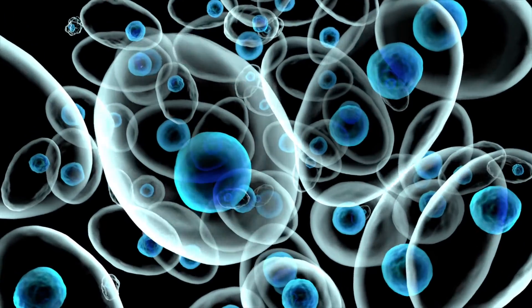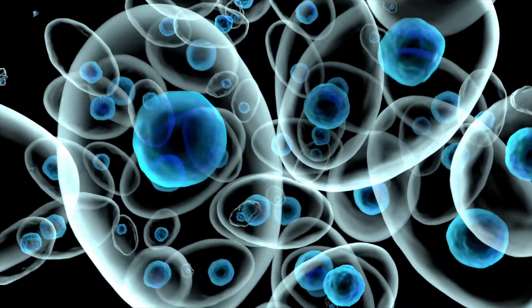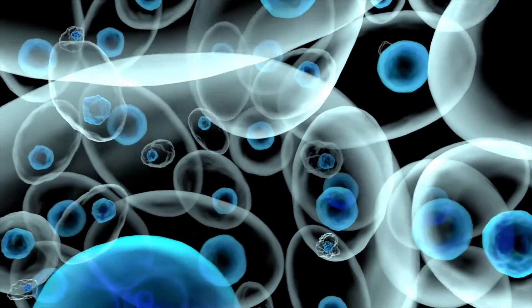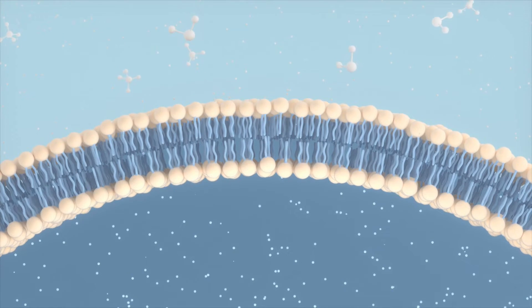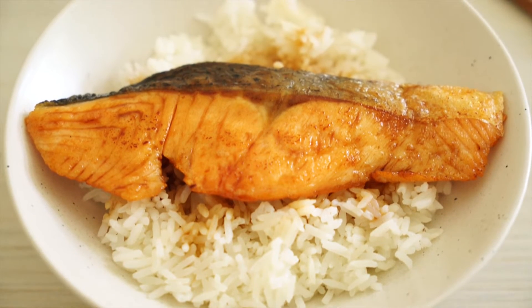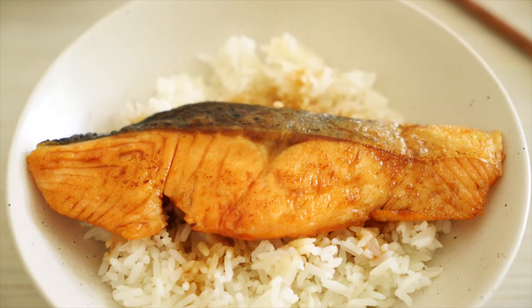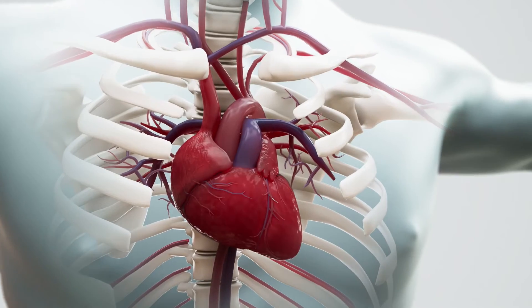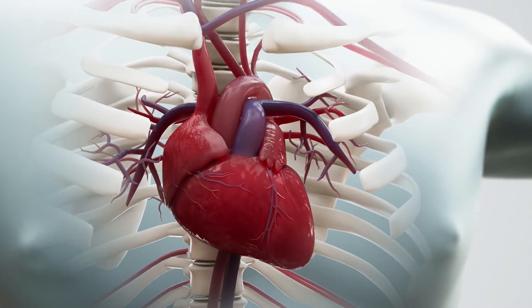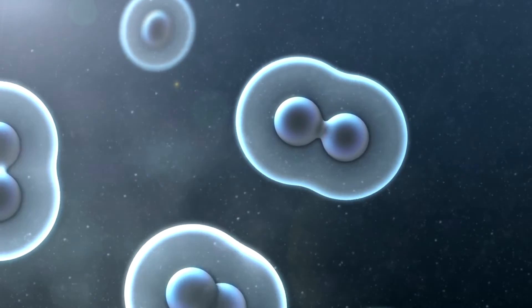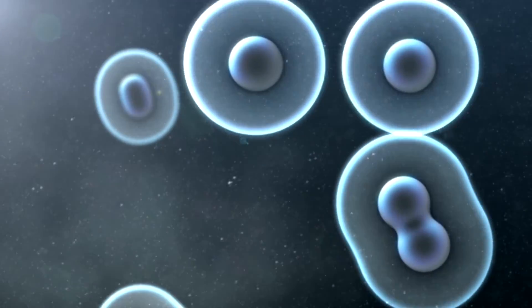No matter what kind of organism they are a part of, cells have the very important job of keeping the organism alive. They transfer materials, like oxygen and water, into and out of the cell. In the case of animal cells, they allow our bodies to obtain energy from the food we eat. They tell our heart to keep pumping and our lungs to keep breathing. And they contain important genetic information that can be passed on to new cells.